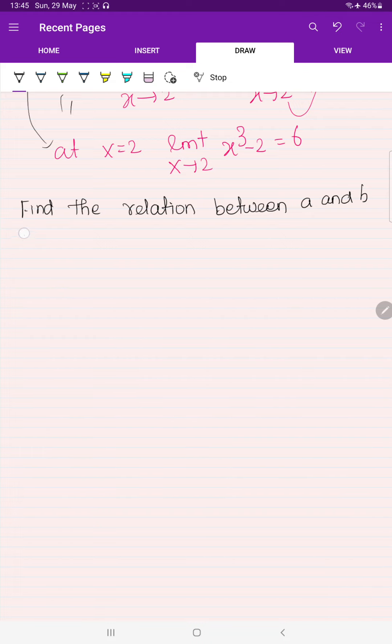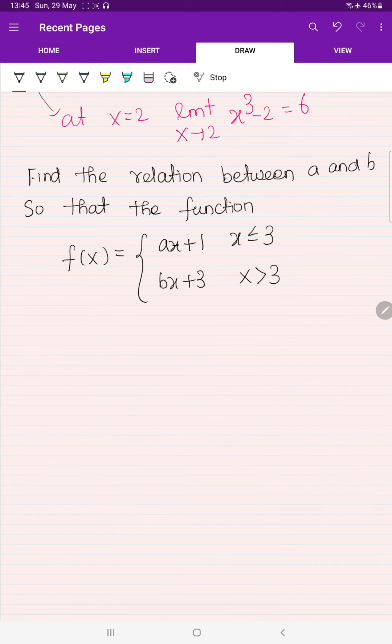Find the relation between A and B, so that the function f of x, so that the function f of x, it is defined as A x plus 1 and B x plus 3, this is for x less than or equal to 3, this is for x greater than 3 and the statement is continuous. Find the relation between A and B, so that the function f of x at x equal to 3 is continuous.